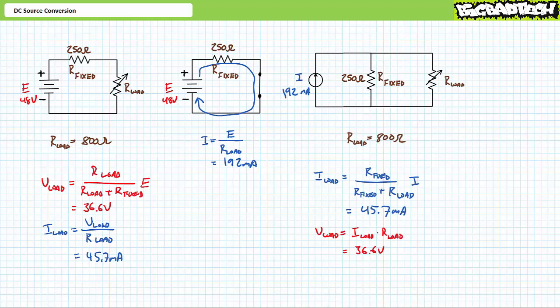Our modified configuration is a perfect setup for the DC current divider rule. We know the incoming current and both resistances in a parallel combination. An application of the DC current divider rule demonstrates current through the variable load resistor will be 45.7 milliamperes. A subsequent application of Ohm's law demonstrates voltage across the variable load resistor will be 36.6 volts. I have a reasonable degree of confidence our answers are correct.